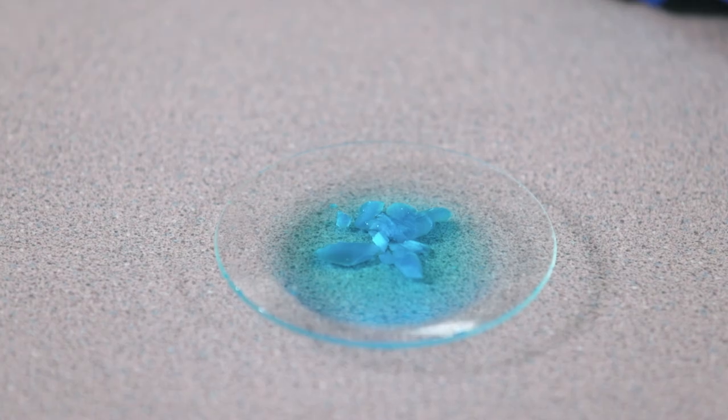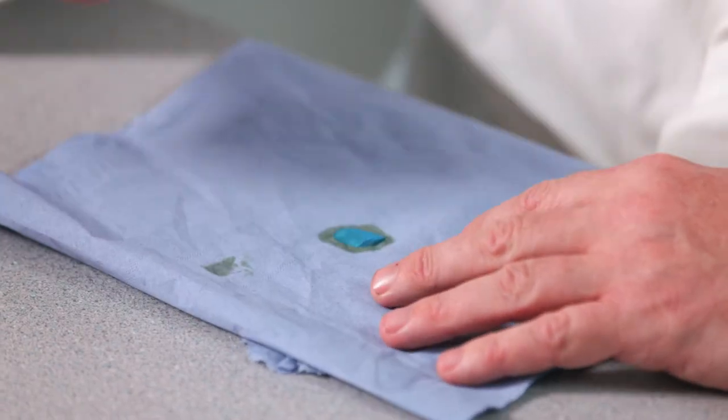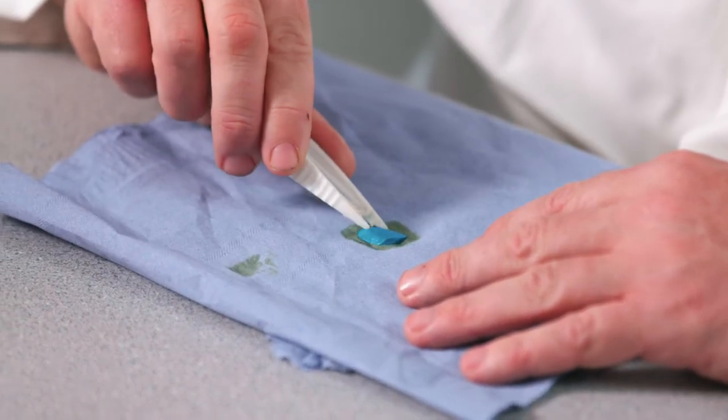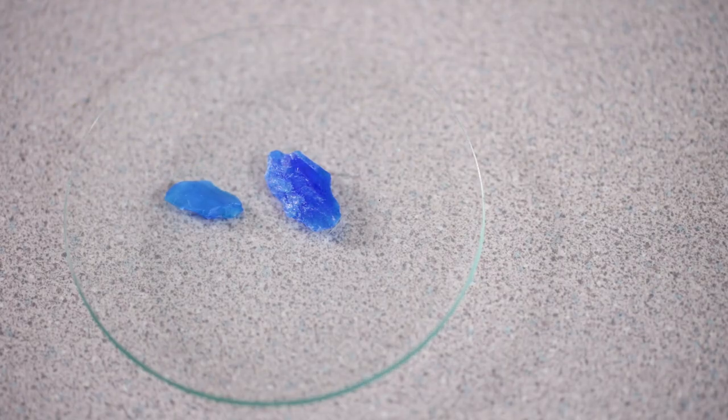The crystals can be carefully removed from the solution by using tweezers and then dried on a paper towel. Take care not to wash these crystals as copper sulphate is soluble and your crystals will soon vanish back into the solution.